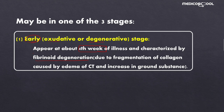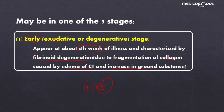The early stage is characterized mainly by fibrinoid degeneration. This fibrinoid degeneration is mainly due to fragmentation of collagen, which is caused by edema of the connective tissue and an increase in the ground substance. The increased fluid puts pressure on the collagen filaments, causing them to break down. When these degenerated collagens are stained by a specific stain, they stain like fibrin, hence the name fibrinoid — meaning fibrin-like degeneration.